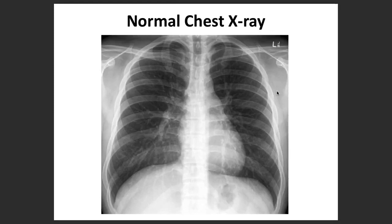Now let's go deeper into interpretation of chest X-rays. My mnemonic is A-B-C-D-E-F-G-H: A for airway, B for bones, C for cardiac shadow, D for diaphragm, E for effusion, F for lung fields, G for gastric bubble, and H for hila and mediastinum. Let's have a look at what we see.